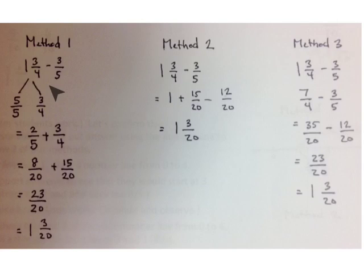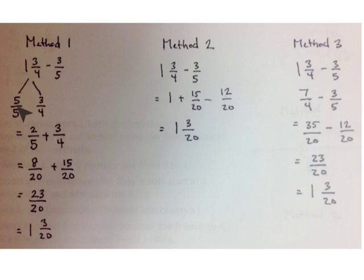In this problem, we're going to show three different ways to solve 1 and 3 fourths take away 3 fifths. Method 1: think of the whole number 1 in 1 and 3 fourths as 5 fifths. The reason we're renaming it as 5 fifths is so we can take away 3 fifths. 5 fifths take away 3 fifths is 2 fifths.